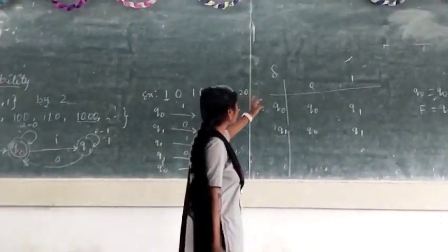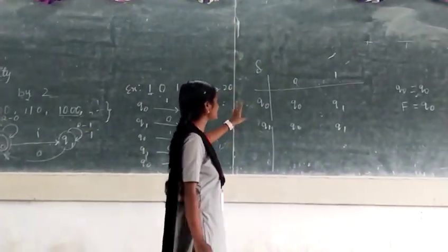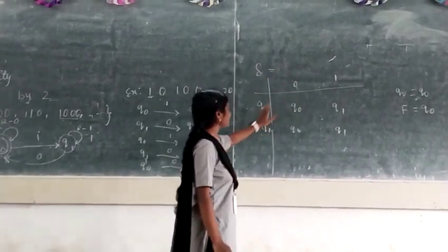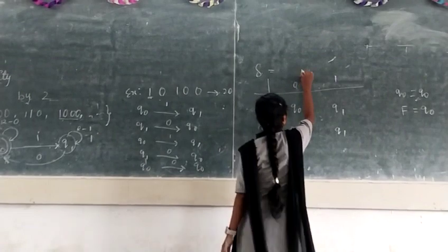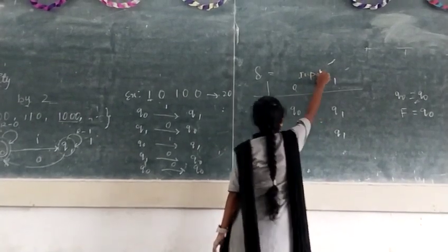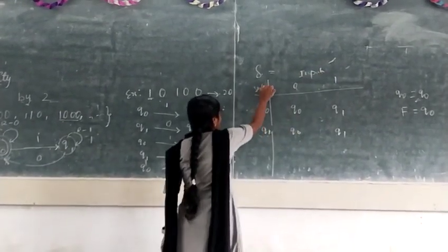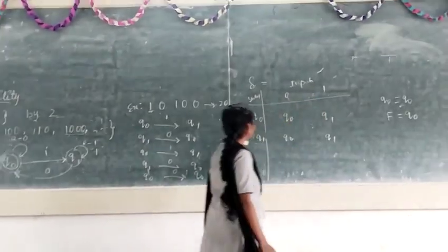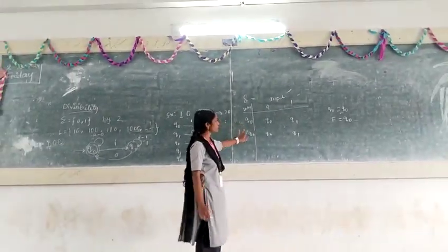Next, this is the transition function, this is the transition table. Our transition table contains input symbols and states. Here, we have two input symbols, zero and one, and we have two states, Q0 and Q1.